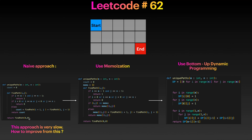If you've seen the Fibonacci problem, that's the first thing you learn in dynamic programming. Not only do we have optimal substructure in this problem, we also have overlapping subproblems — that should ring a bell that we should use memoization, which is the top-down approach, or we can use the bottom-up approach. Using memoization we will store all the data. When i equals m minus one and j equals n minus one, we return one. If we are outside the boundary, we return zero.